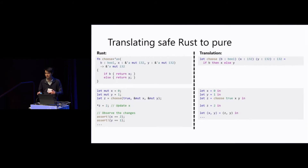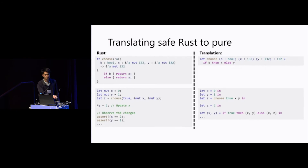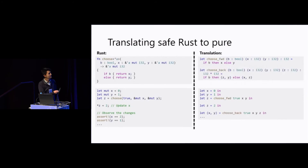If the boolean were false, we would have returned y, and the reverse would apply: x would be unchanged and y would be updated. So to be more precise, when we call 'choose' we need a forward computation to derive z from the inputs, and then when we end the lifetime we need a backward computation to propagate changes back to the inputs that were loaned to the function.